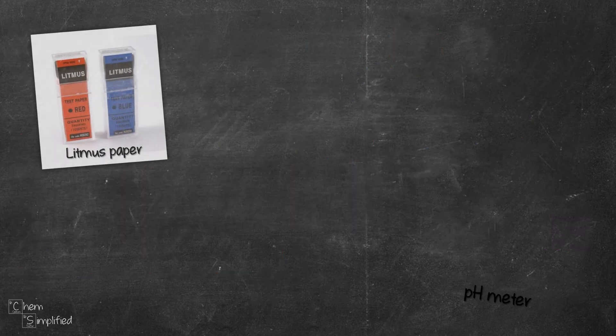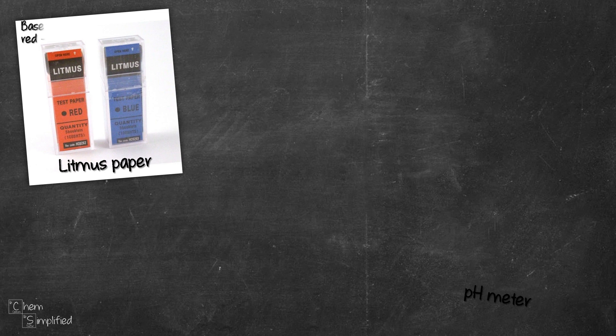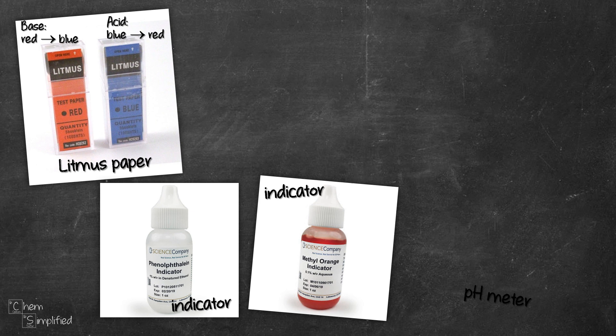We can use litmus paper. Base will turn red litmus blue, while acid will turn blue litmus red. We can also use pH indicators like phenolphthalein and methyl orange.